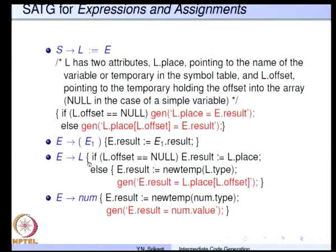For parenthesized expressions, E going to L on the right side: if L dot offset is null, E dot result is L dot place. If it is not null then the right-hand side is an array expression. A single quadruple cannot have array expressions on both the left and right sides simultaneously, so we generate a temporary: 'E dot result = L dot place[L dot offset]'. An index instruction is generated and the value is in E dot result.